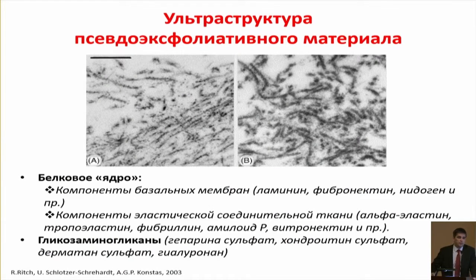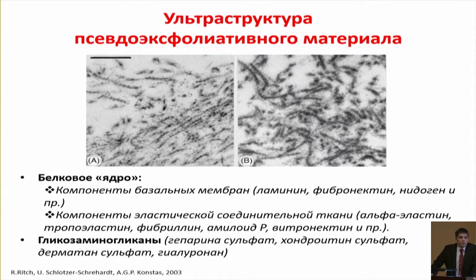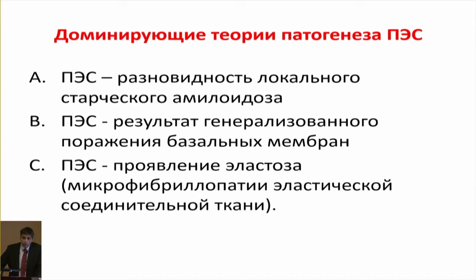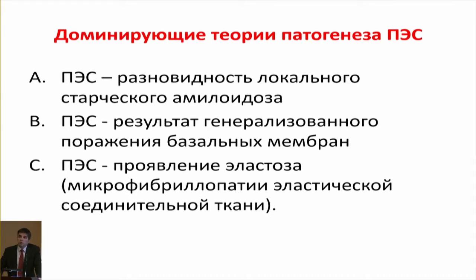Currently this is a very active direction for R&D. There is no quite clear understanding about the ultrastructure — we know there is a protein part with a glycosaminoglycan surrounding environment, and in the protein nuclei there are components of basal membranes, elastic tissue, amyloids and amyloid-like proteins. Three main theories of pathogenesis relate to these substrates, with the dominant one being that pseudo-exfoliative process is a systemic elastosis — a microfibrillopathy of elastic connective tissue.